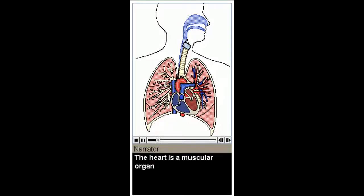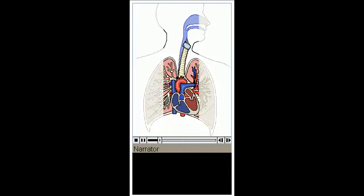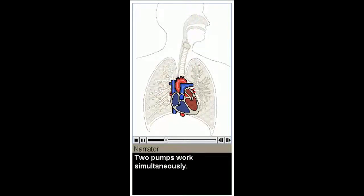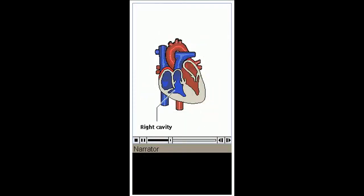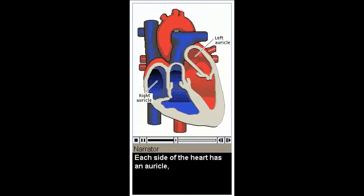The heart is a muscular organ that pumps blood to all parts of the body. It can be divided into two cavities. Two pumps work simultaneously. The right cavity takes in oxygen-poor blood from the body and pumps it to the lungs. The left cavity takes oxygen-rich blood from the lungs and returns it to the body. Each side of the heart has an auricle, which draws blood in from the veins, and a ventricle, which pushes the blood out through the arteries. There are two stages in each heartbeat cycle, the systole and the diastole.